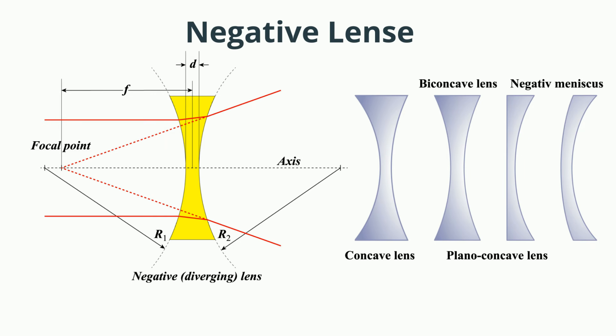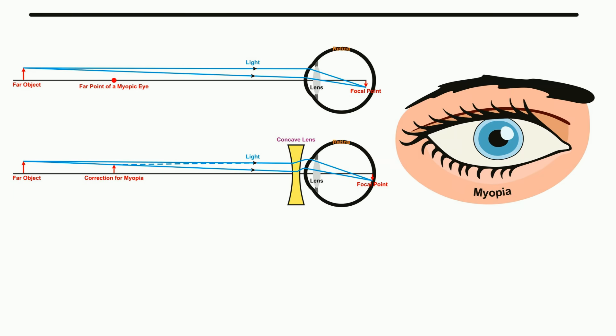A concave lens is also called a negative lens because of the location of the focal point. It can be used to correct short-sightedness or myopia. Concave lenses are also used in flashlights.